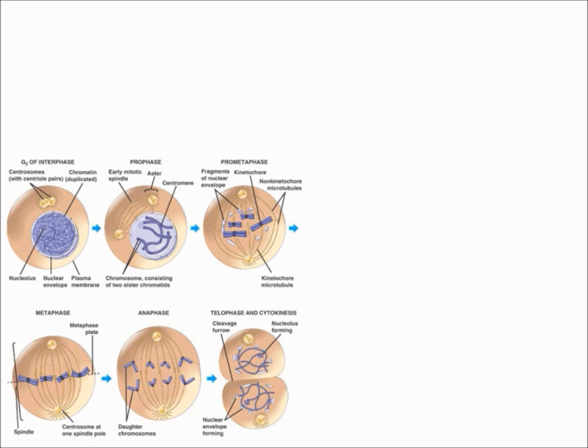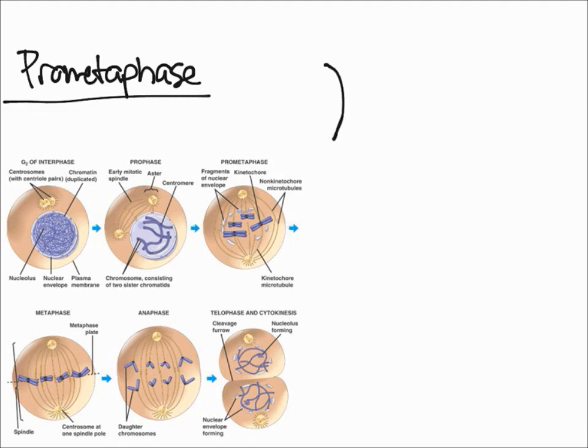The next step is prometaphase. It's important to remember that the centromere of the chromosome - imagine the chromosome is like this - the centromere is essentially the middle, and each chromosome develops two kinetochores.